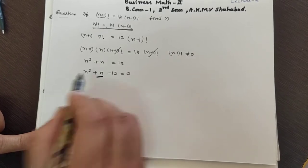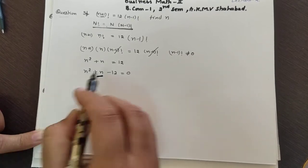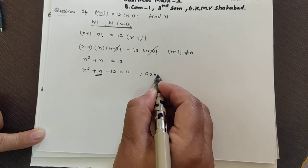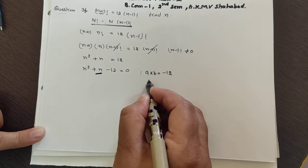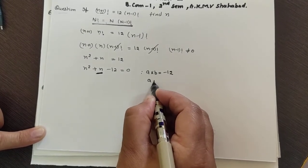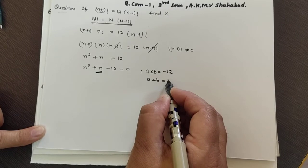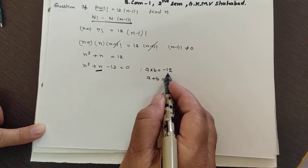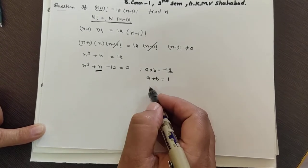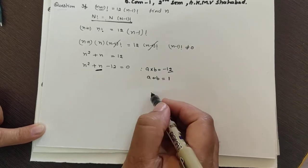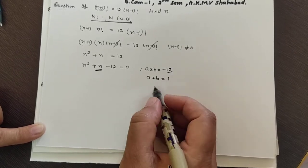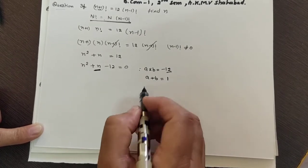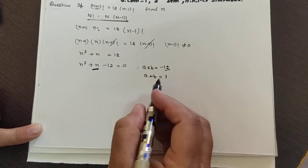To factorize, we split the middle term into two numbers whose product gives -12 and whose sum gives 1. Looking at factors of 12: 1×12, 2×6, 3×4 — we get 3 and 4.